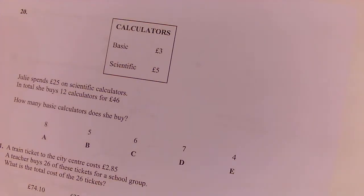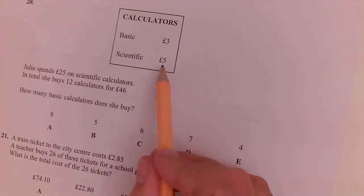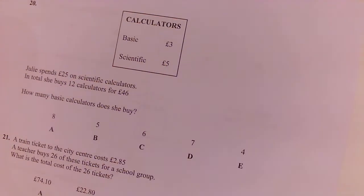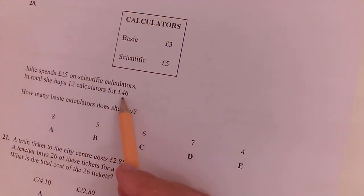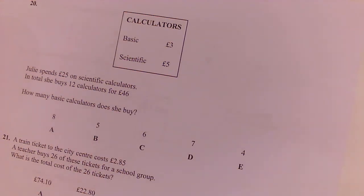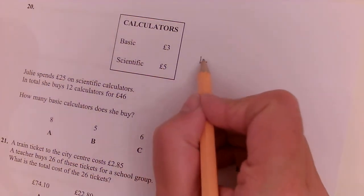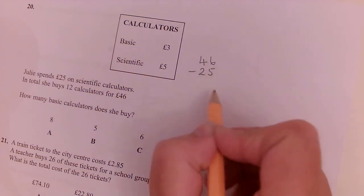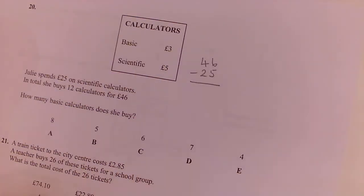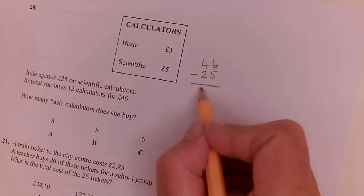Question 20. Julie spends £25 on scientific calculators. So there are five of each. So she buys five of them. In total, she buys 12 calculators for £46. How many basic calculators does she buy?